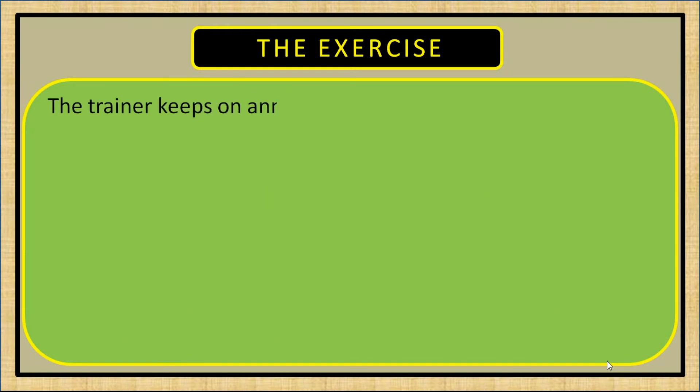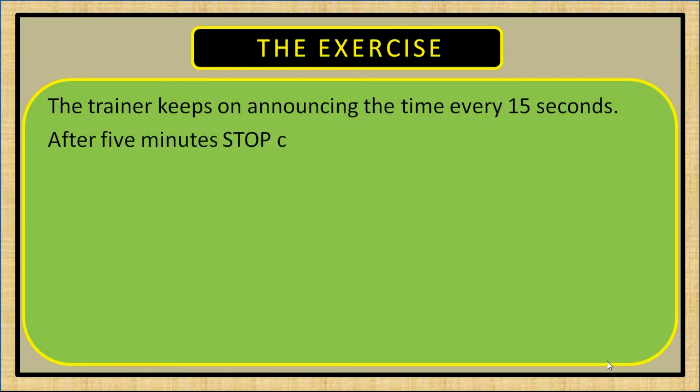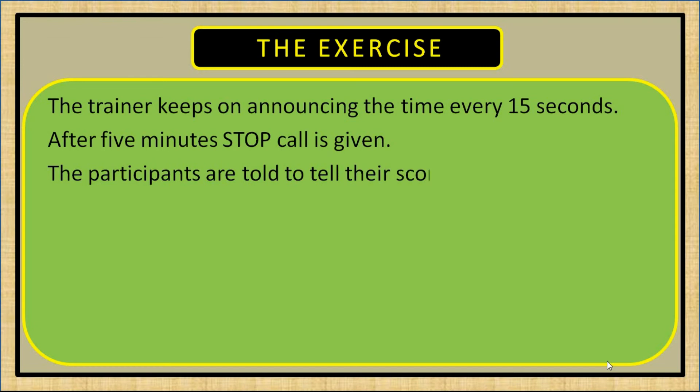You now have 2 minutes to plan. When the trainer says start, everybody is supposed to start. The trainer keeps on announcing the time every 15 seconds. After 5 minutes, the stop call is given and participants are told to declare their score.